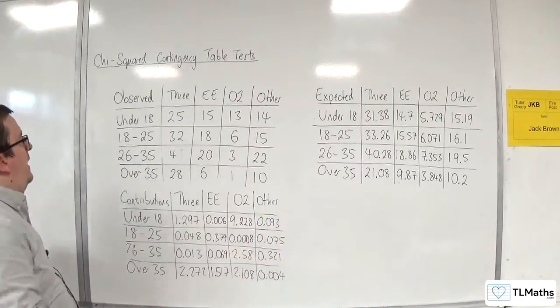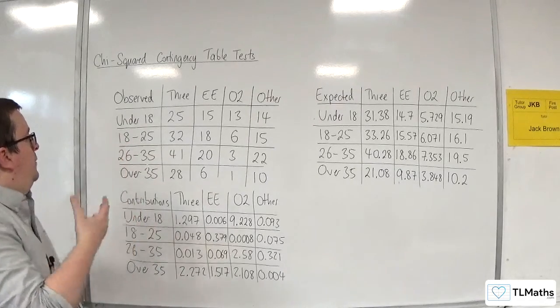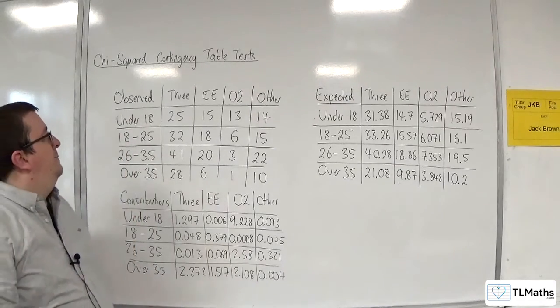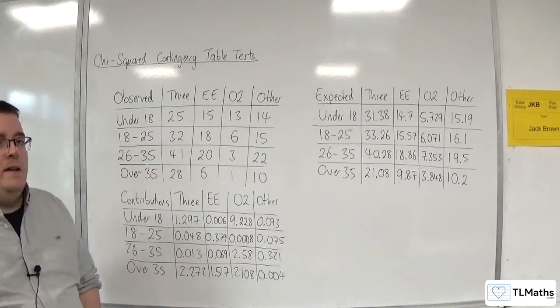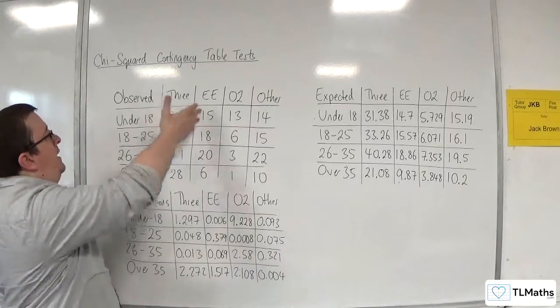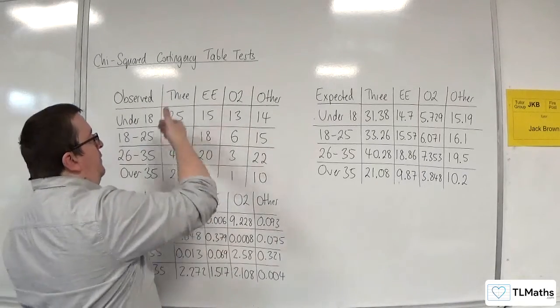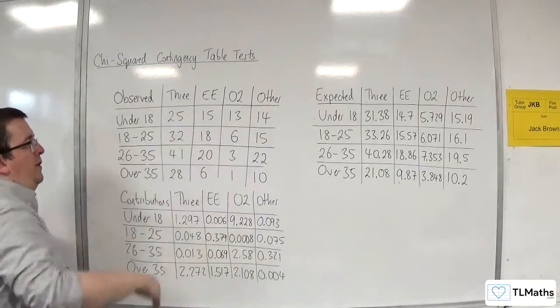What I've got here is four different age groups: under 18s, 18 to 25, 26 to 35, and over 35. And they're mobile phone contract providers, so we've got 3, EE, O2, and we've got another column as well. So this is what I've observed. These are the frequencies that I've observed.